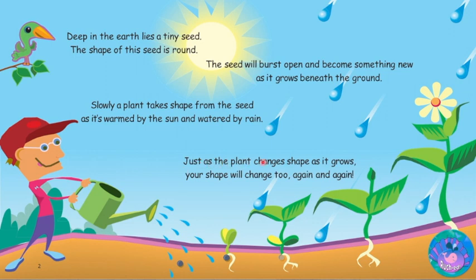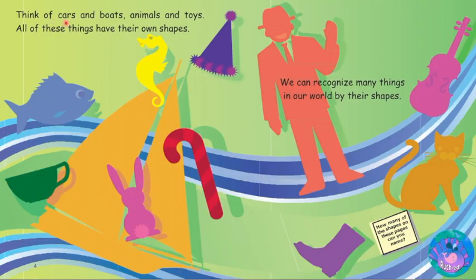Just as the plant changes shape as it grows, your shape will change too, again and again. Think of cars and boats, animals and toys — all of these things have their own shapes. We can recognize many things in our world by their shapes. How many of the shapes on these pages can you name?